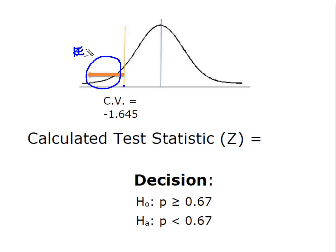We would have needed a test value more extreme than negative 1.645 because this is the rejection region of the curve. If my calculated test statistic falls somewhere here, then our decision is do not reject H0.